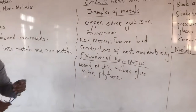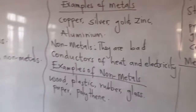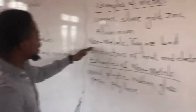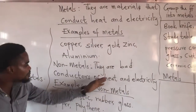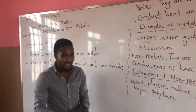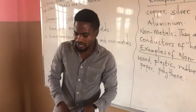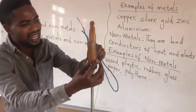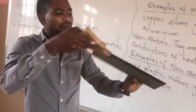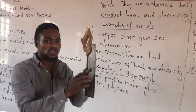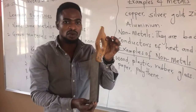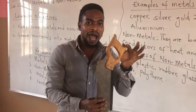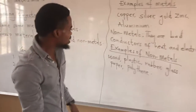Aside metals, we also have non-metals. Non-metals are materials that are bad conductors of heat — they do not conduct heat or electricity. For example, looking at this tool here, the handle is wood. If I put this in a fire, the metal part will burn and change color, but the heat will not get to the wood, simply because wood is a bad conductor of heat.